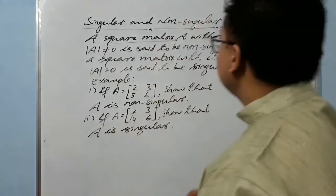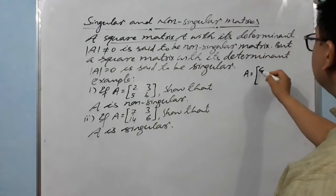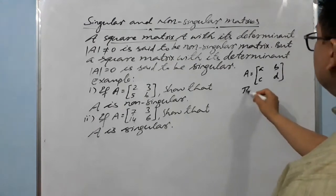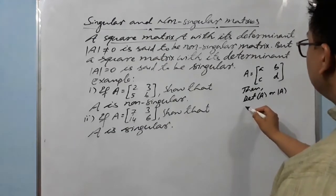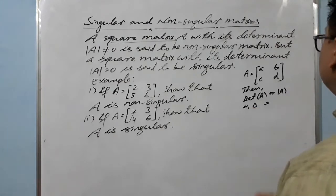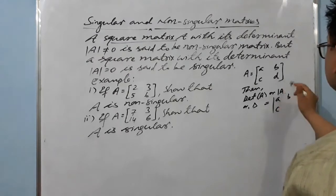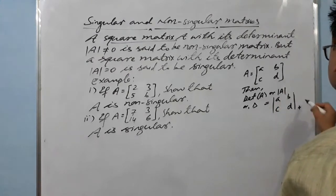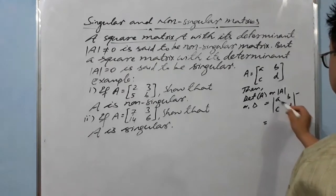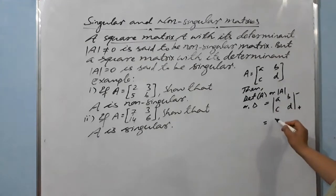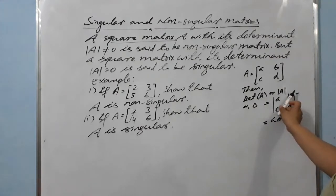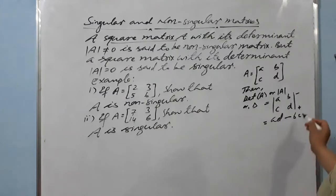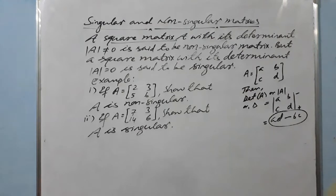Let me remind you about the determinant. If A equals [a, b; c, d], then its determinant can be written as |A|, det(A), or simply delta. The expansion form is: product of elements on the main diagonal minus product of elements on the secondary diagonal, giving us ad minus bc. This real number is called the determinant of the square matrix.